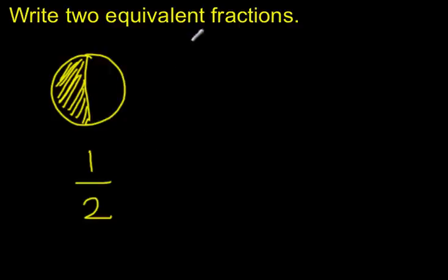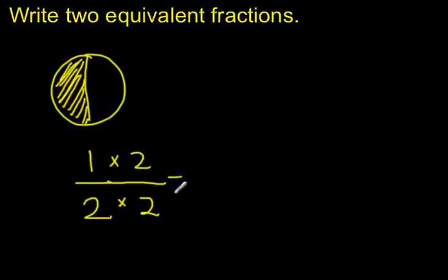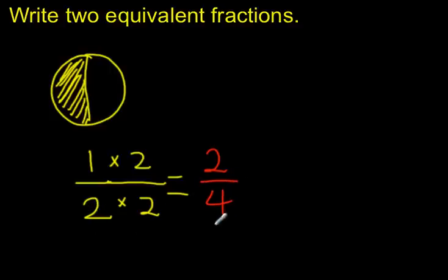Now, I can use multiplication to get more parts in the same whole. Maybe I want twice as many parts in my whole. Without changing the size of the fraction, I'm going to multiply my numerator by 2 and multiply my denominator by 2. We'll see that we get 1 times 2 equals 2, and 2 times 2 equals 4.